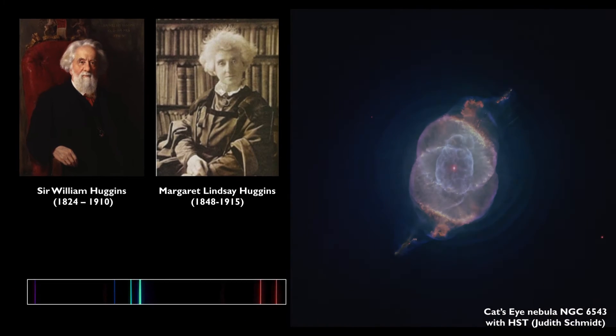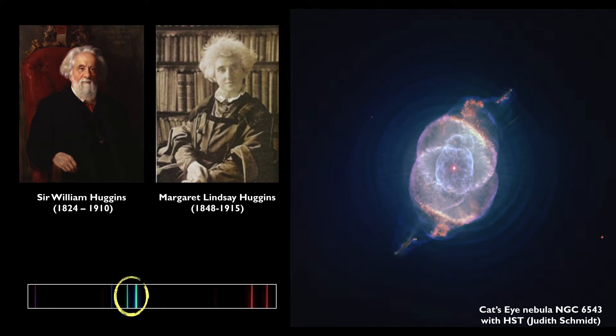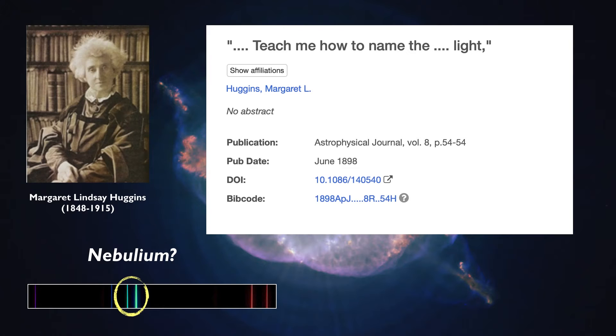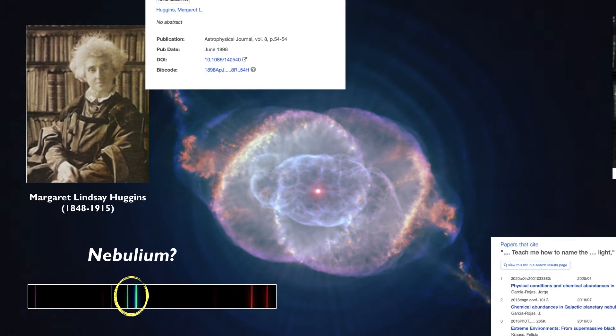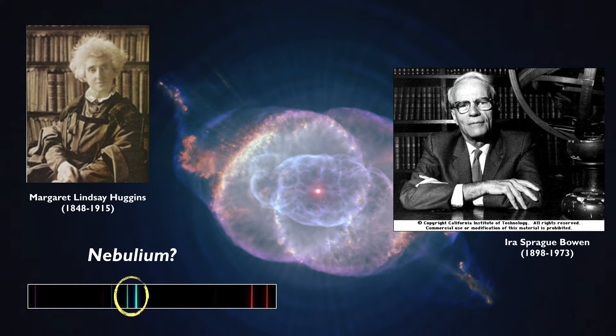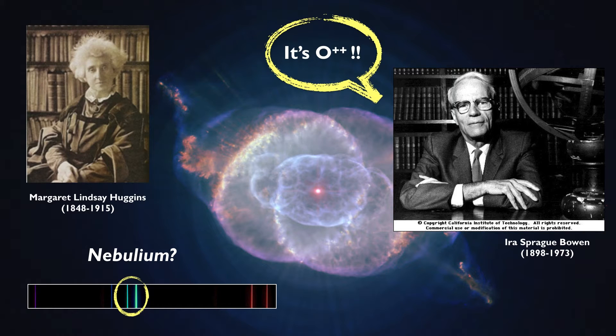In 1864, two pioneers of astronomical spectroscopy, William and Margaret Higgins, detected the bright emission lines of the doubly ionized oxygen in their observation of the Cat's Eye Nebula. In June 1898, Margaret Higgins published a paper in the 8th edition of the Astrophysical Journal, proposing that these lines were features of an element they called Nebulion. It is sad to see that Margaret Higgins' paper has only received five citations, four of them a century after its publication. In 1927, the American physicist Ira Sprague Bowen showed that the lines are indeed emitted by the doubly ionized oxygen. In astronomy, any element that is not hydrogen or helium is called a metal — so for an astronomer, oxygen, carbon, nitrogen, sulfur, iron and gold are all metals.